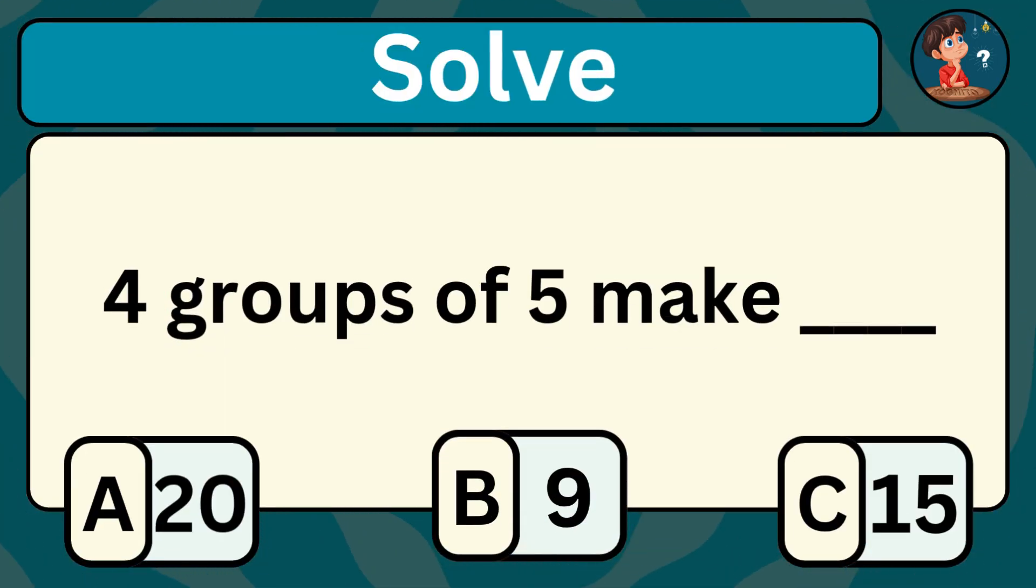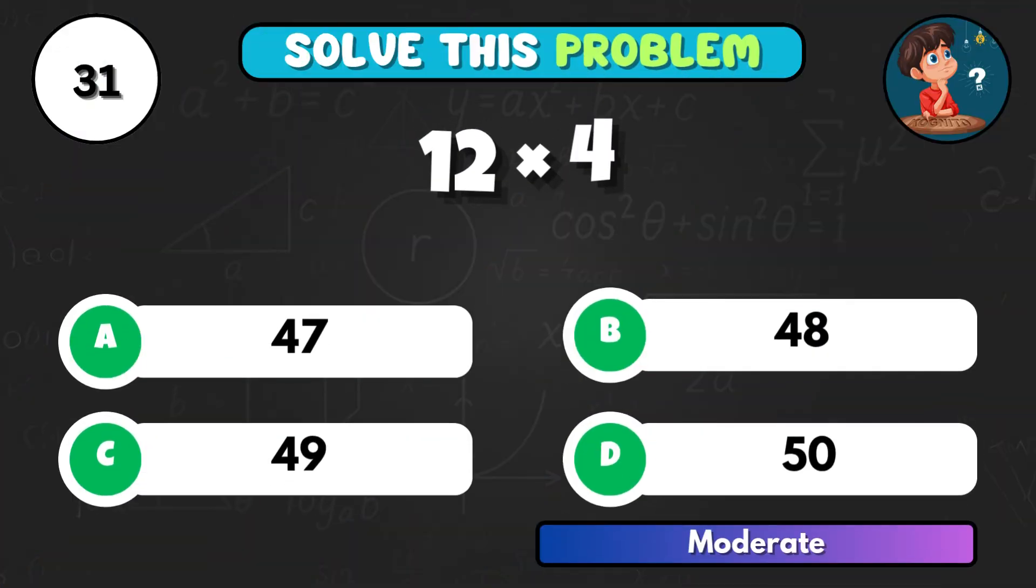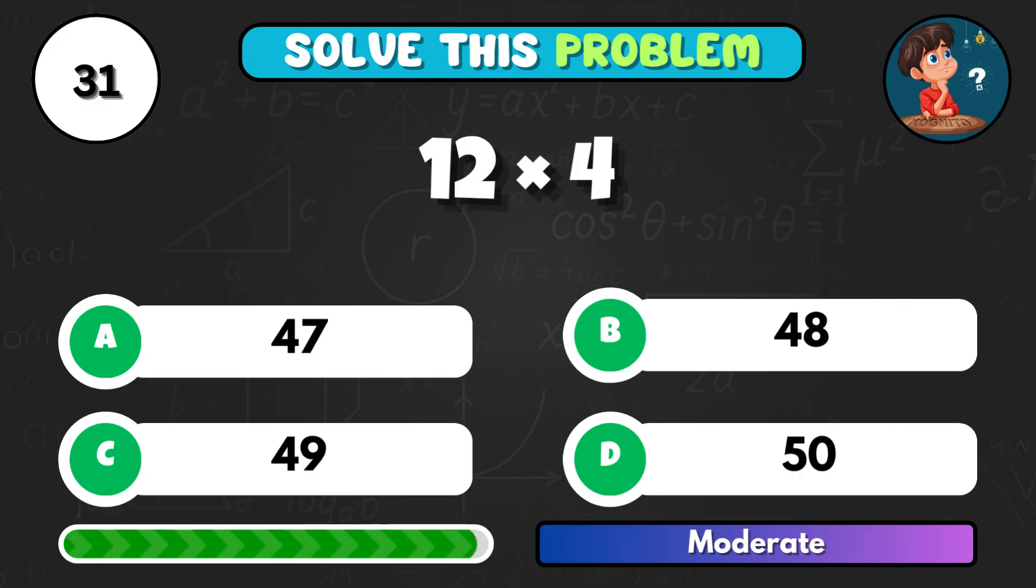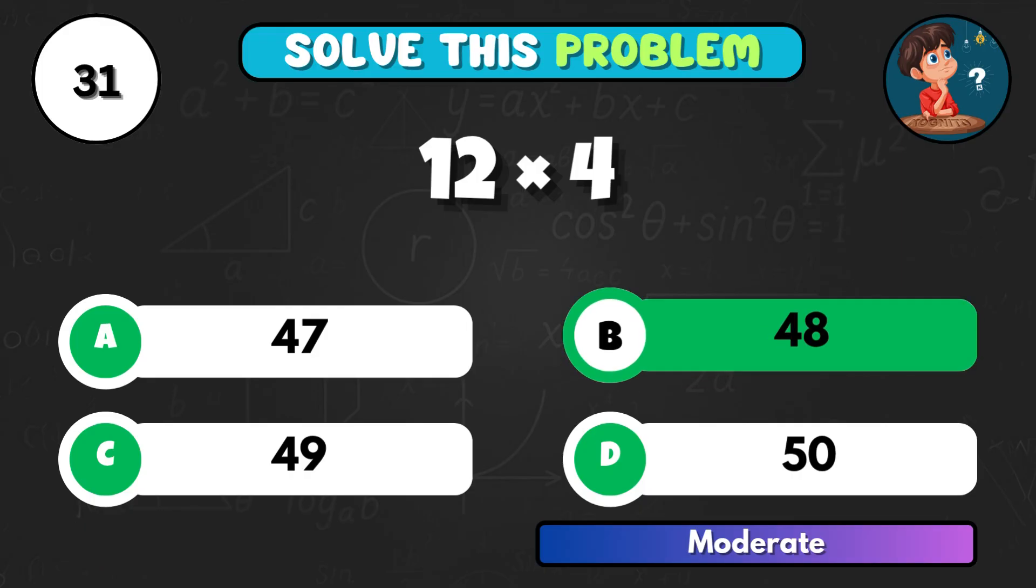Let's solve this one. 4 groups of 5 make how many in total? And 12 times 4. Correct option B, 48.